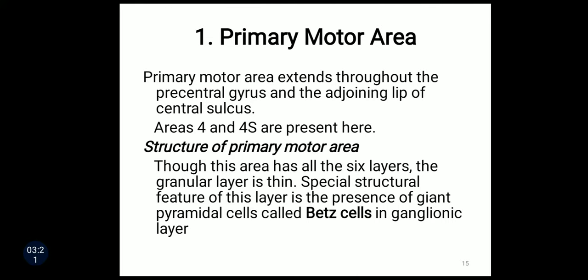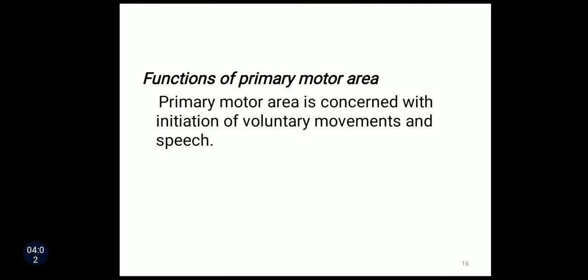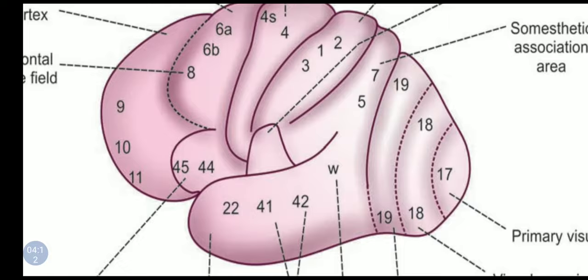Now we will study the primary motor area. The primary motor area extends throughout the precentral cortex and the adjoining paracentral sulcus. Two areas are included in this primary motor area, numbered as area four and area four S. Although this area has all six layers, the granular layer is thin. A special structural feature of this area is the presence of giant pyramidal cells, called Betz cells, from which various fibers of the pyramidal tract originate. The primary motor area is mainly concerned with initiation of voluntary movements and speech. In this diagram you can see area number four and four S, which are the primary motor areas.